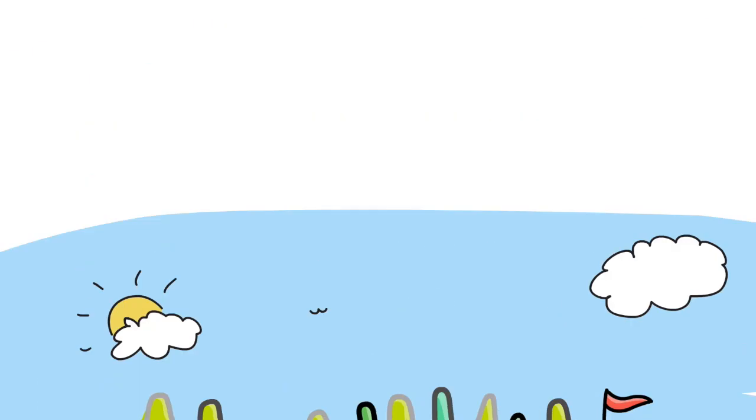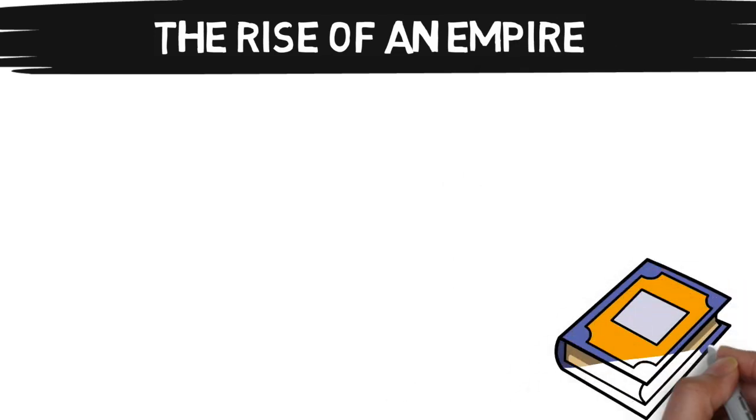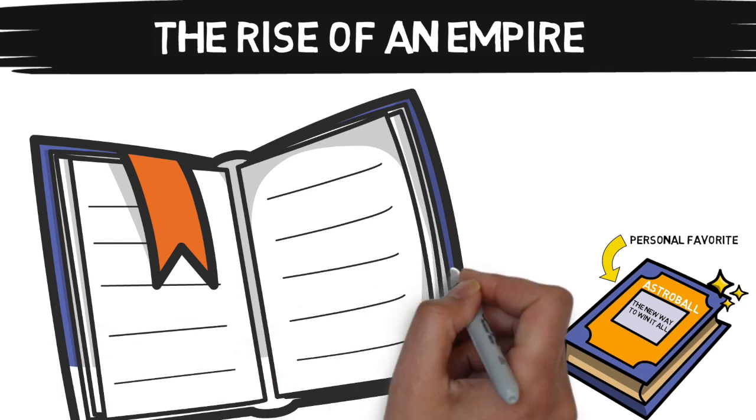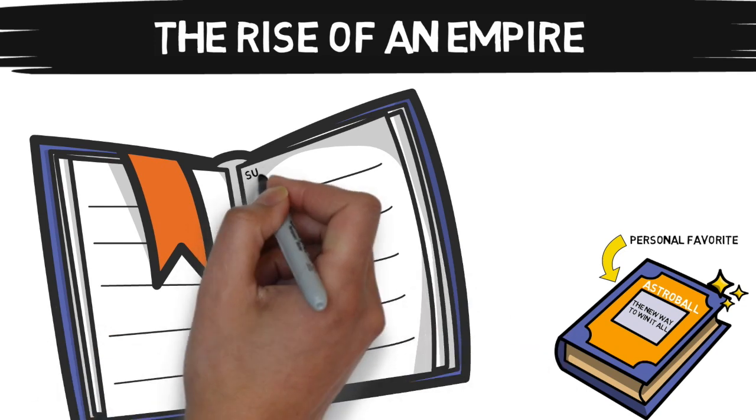The rise of this empire was documented in a phenomenal book called Astroball, The New Way to Win It All by Ben Reeder. This is a personal favorite book of mine, and if you haven't read it yet, you must. It goes into great depth on the process of building up this culture in a fun and easy to read way.